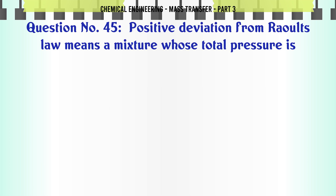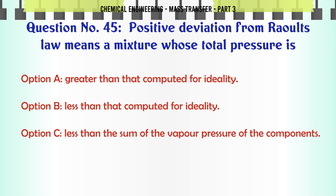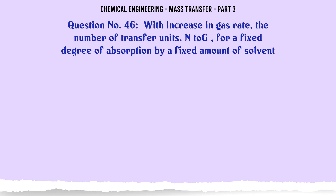Positive deviation from Raoult's law means a mixture whose total pressure is: A) greater than that computed for ideality, B) less than that computed for ideality, C) less than the sum of the vapor pressures of the components, D) none of these. The correct answer is: greater than that computed for ideality.